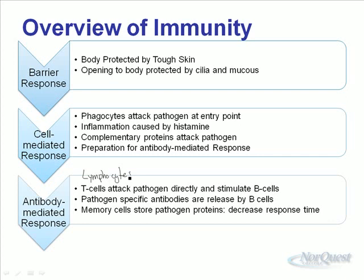For example, with chickenpox — we get the chickenpox virus once, we fight it off. After killing off all of those viruses, little bits of them are saved by our memory cells. That way, if we're exposed to chickenpox again, we already have a memory of what antibodies we need to produce in order to fight it off faster. That's why people often don't get a reinfection of chickenpox — we fight it off before the symptoms actually appear.